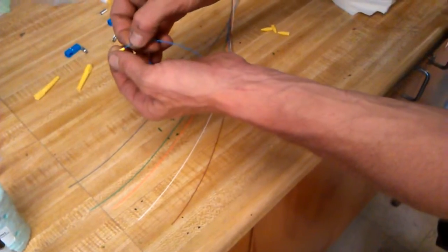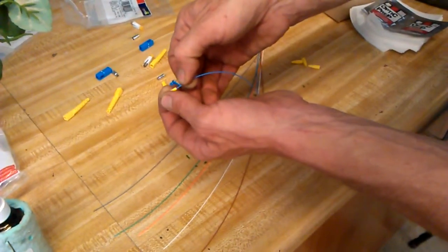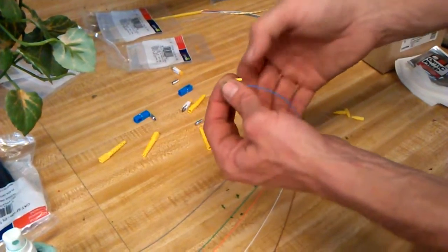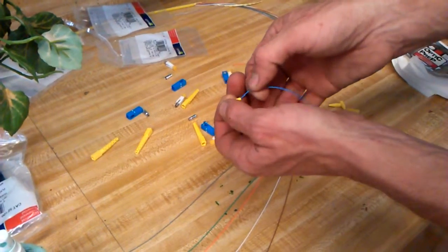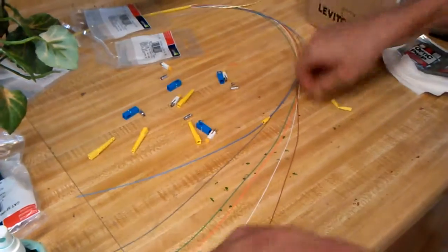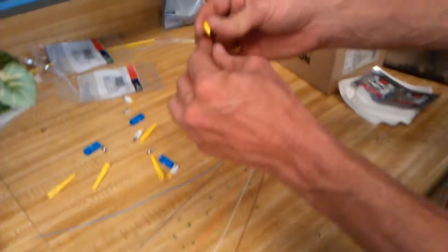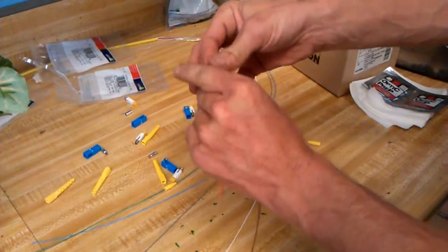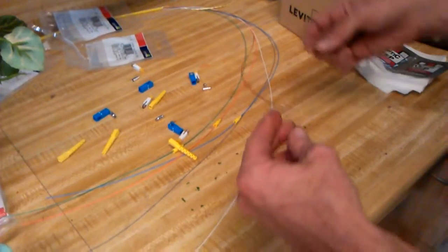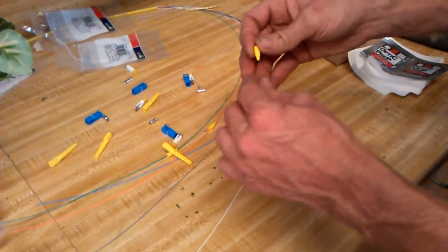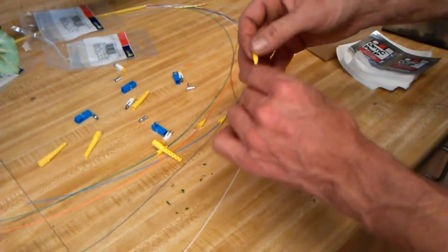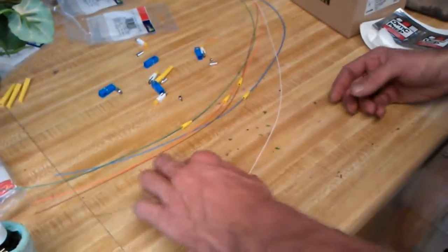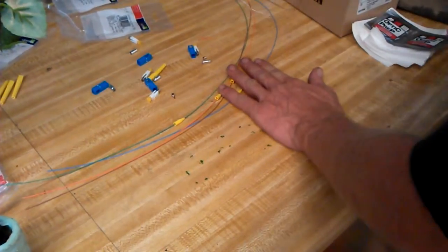The first thing I'm gonna do is put all my boots on before I forget. I've got a blue strand, and notice the closer I hold it the more control I have. I've got blue, orange, green, brown. Now if you forget to put one of these boots on, you could cut it down the middle with a razor and use some super glue. It isn't an acceptable means of doing it, although sometimes in an emergency you have to.